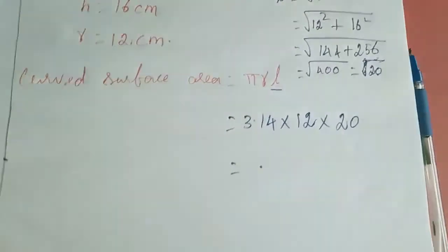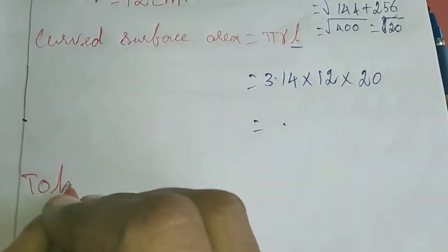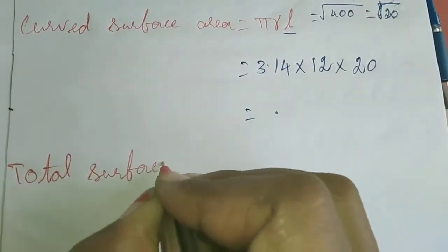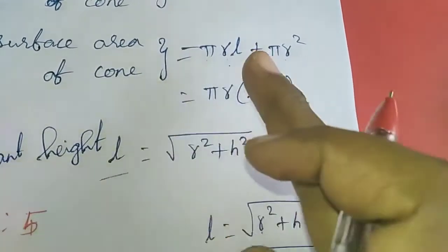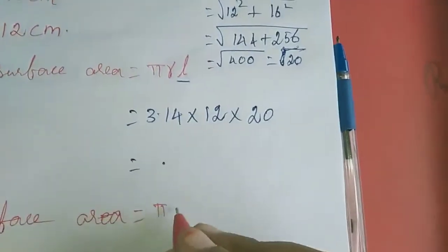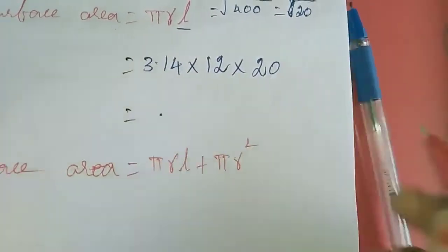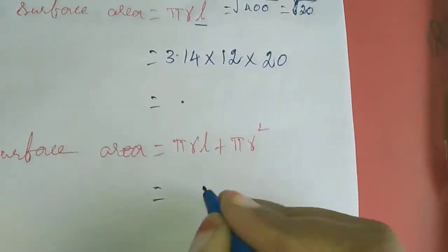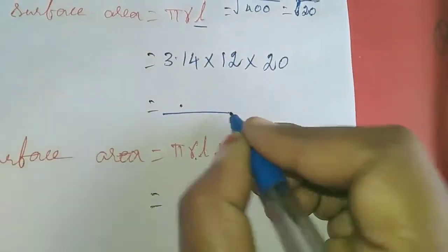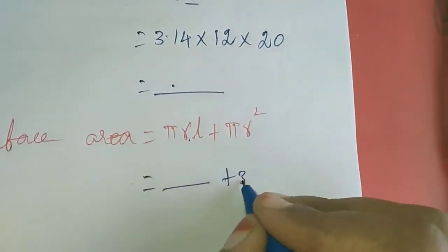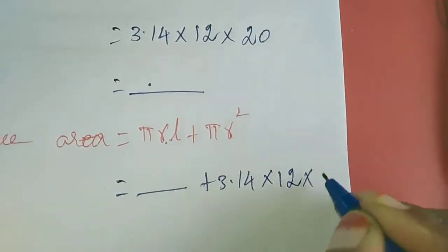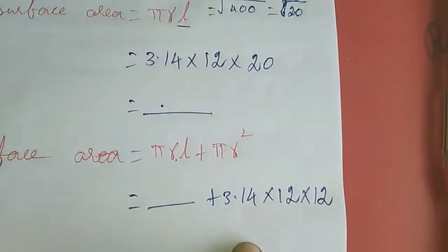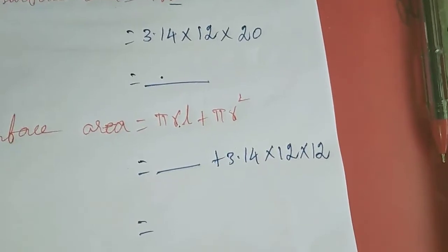Next they are asking total surface area. Total surface area formula is pi r l plus pi r square. Since curved surface area is already known, write that answer here, plus pi r square with r equal to 12. This simplification is homework for you — simplify and get the answer for total surface area.